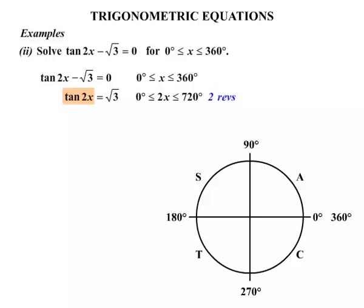Now tan 2x, well it's tan and it's positive. So which quadrants? Certainly the first quadrant and then the T quadrant. So let's give those a tick. They're the two quadrants where tan is positive.